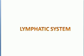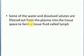This tissue fluid is called lymph. When blood reaches the capillaries, some of the water and dissolved solutes are filtered out from the plasma into the tissue space to form a fluid — that fluid is called lymph.